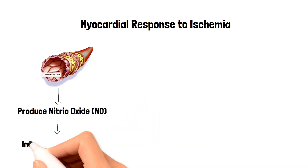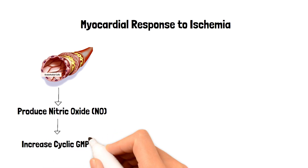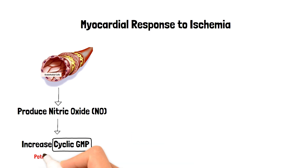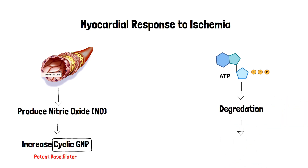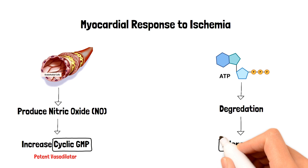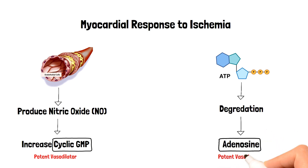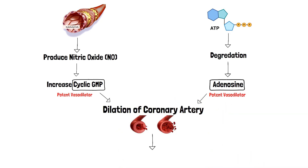This nitric oxide increases the cyclic GMP concentration inside the arterial smooth muscle cells. Cyclic GMP is a very potent vasodilator. On the other hand, the degradation of ATP, or adenosine triphosphate, produces adenosine — a chemical present in all human cells and another potent vasodilator.